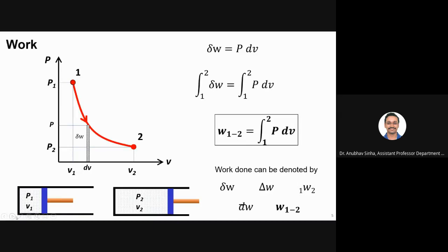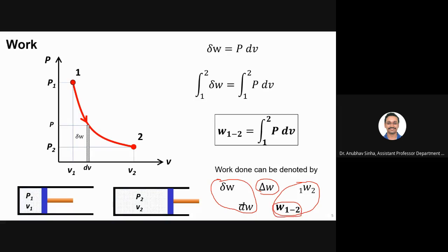There are different symbols used to denote work. The standard notation I will follow in subsequent slides is W subscript 1/2, meaning I am going from state 1 to state 2 and calculating the work done for that process. So W₁₂ denotes work done going from 1 to 2.